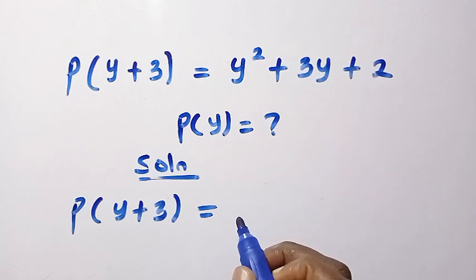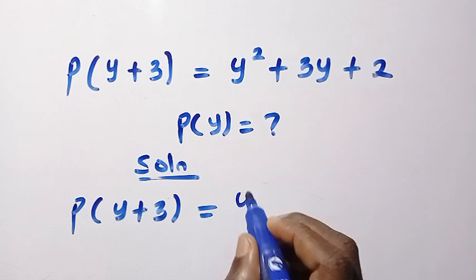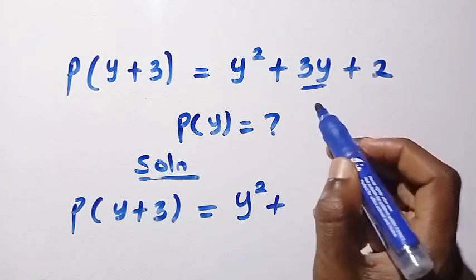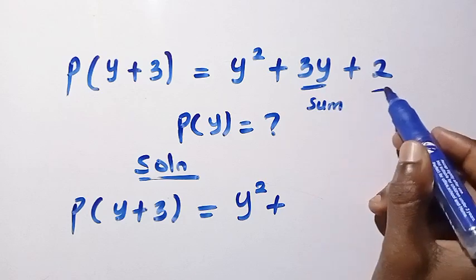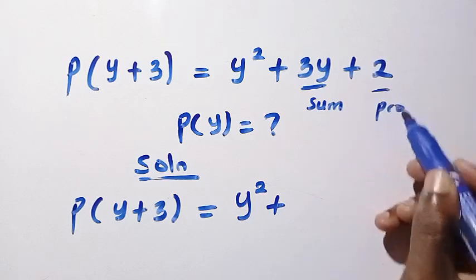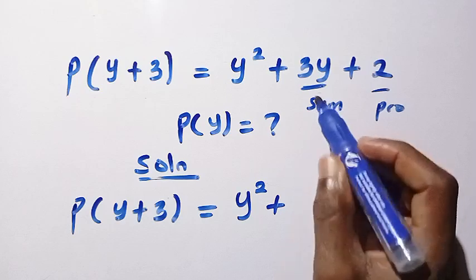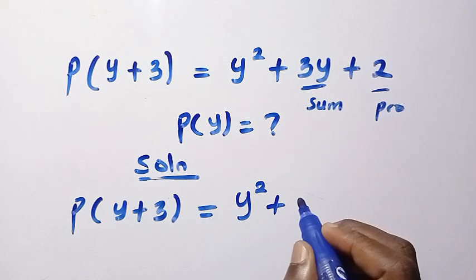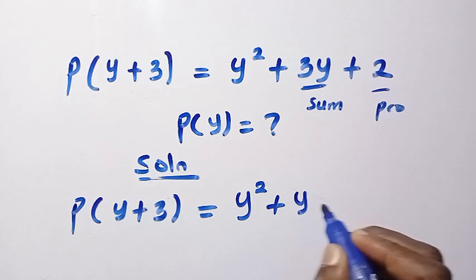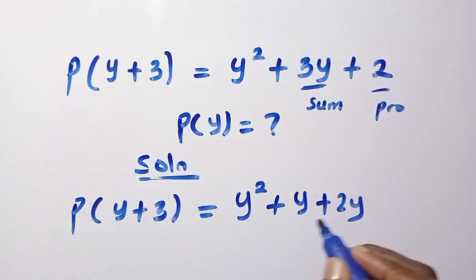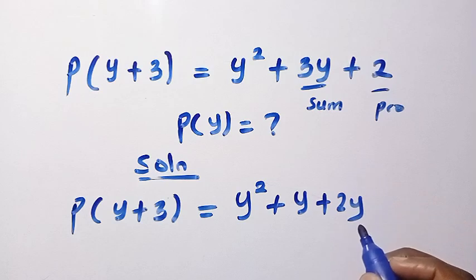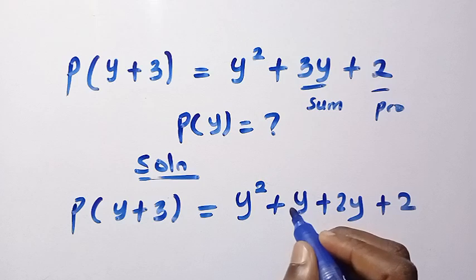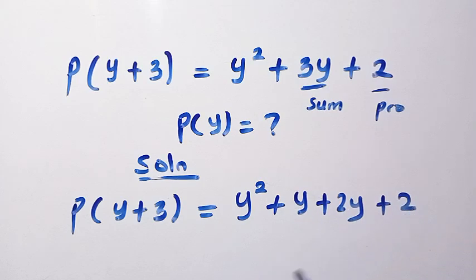By factorizing this one completely, we have y squared plus, so the 3y here is the sum and this one is the product. We look for two numbers that the sum will be 3 and that the product will be 2, which are y plus 2y. So y plus 2y gives us 3y, then plus 2. And we consider the coefficient of this y which is 1. Then 1 times 2, that gives us 2.